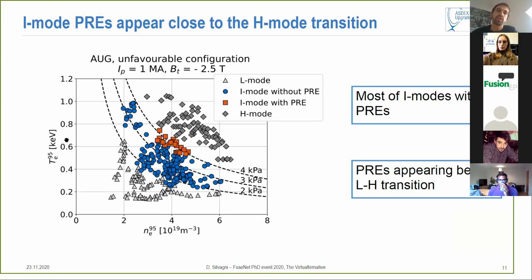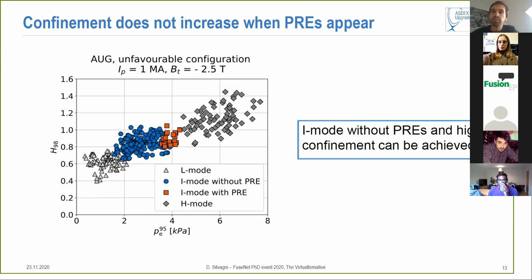So starting with the first question we can have a look at this graph where on the y-axis you have the edge electron temperature and on the x-axis the edge density. You have in light gray L-mode data, in blue I-mode data without these PREs, in orange the data of I-mode with PREs, and in dark gray H-mode data. As you can see, most of our I-modes are blue so without PREs. Then we start to observe these PREs only when we are approaching these 4 kilopascal isobar and so when we are very close to the transition. So in ASDEX Upgrade we observe them only close to the H-mode transition.